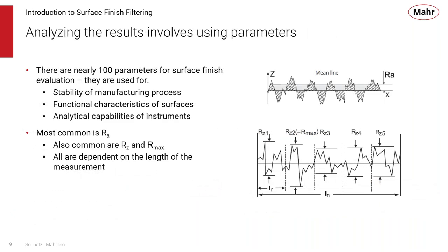There are lots of ways to analyze surfaces — over a hundred different parameters for surface finish evaluation. These can be targeted to check the stability of the manufacturing process, the functional characteristics of surfaces, and complex analytical capabilities. In today's world, RA is the most common parameter, while the rest of the world also uses RZ and Rmax. Between those three parameters, 95% of measurements are probably covered, and they're all dependent on the length of the measuring process.